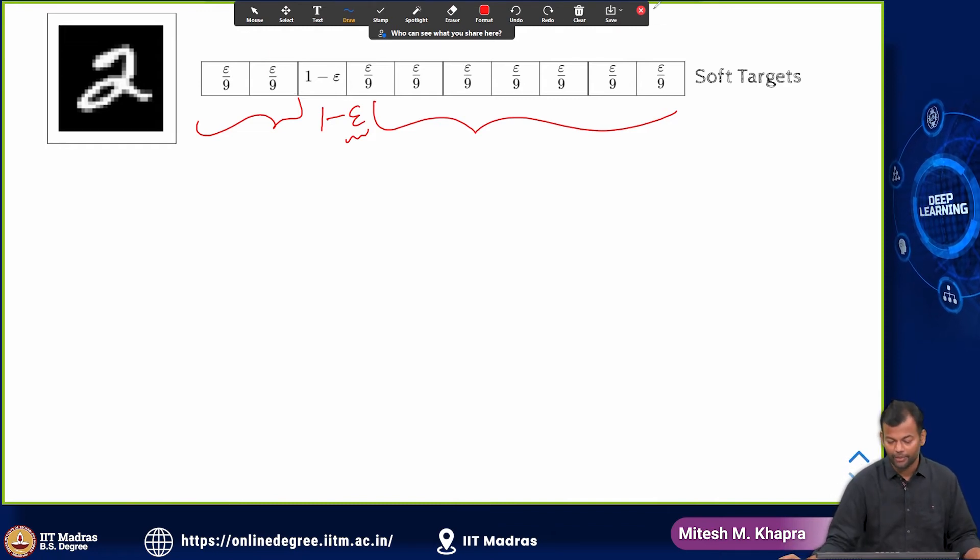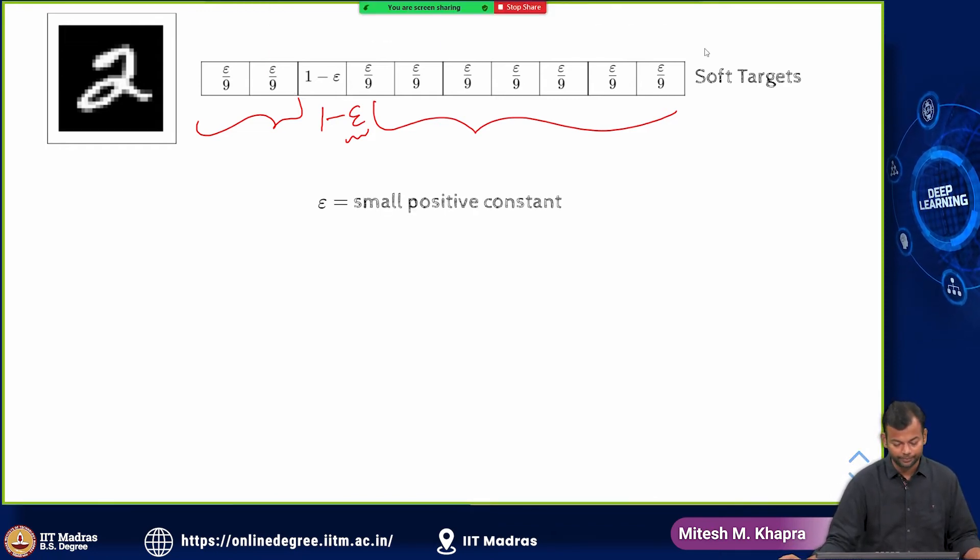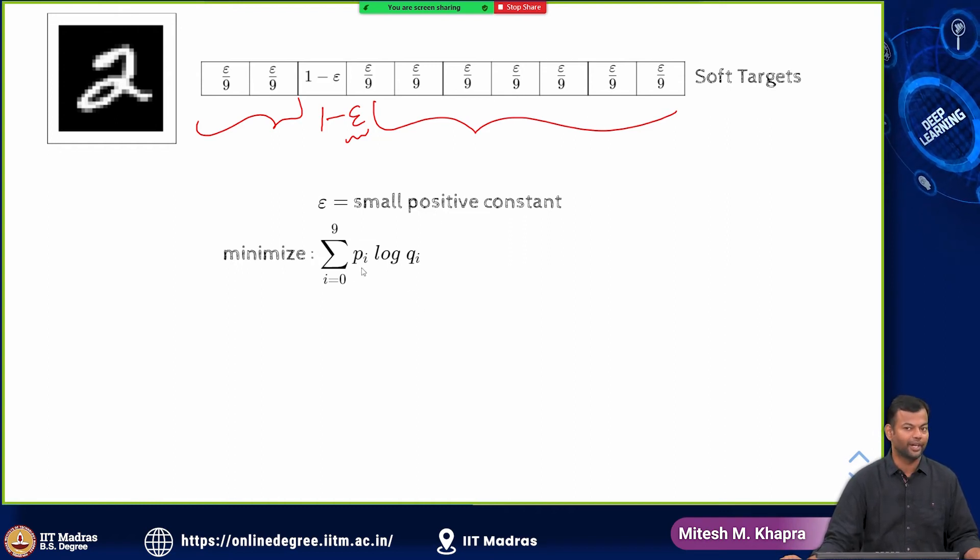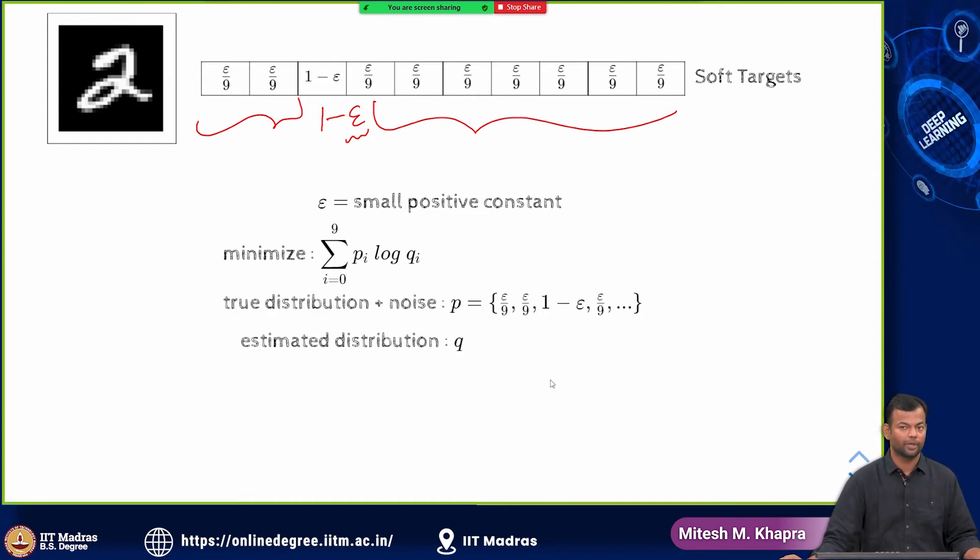But now when I apply my formula, the cross entropy formula, earlier in my P i log Q i if you remember only one term remain, the one which correspond to P i equal to 1. So only the label, the second term would remain, because all the other values were 0. But now all the other values are not 0. So my computation is changing. The loss that I am actually trying to minimize is changing and that will act as a regularizer. Because now you are not trying to minimize the true loss, but a slightly corrupted version of the loss because you have made some change to the outputs.